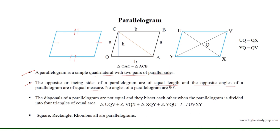In this parallelogram OABC, angle O equals the opposite angle B, and angle C is equal to the opposite angle A. No angles of a parallelogram are 90 degrees. In this parallelogram, side OA equals side CB, equal to B, and side OC equals side AB, equal to A.